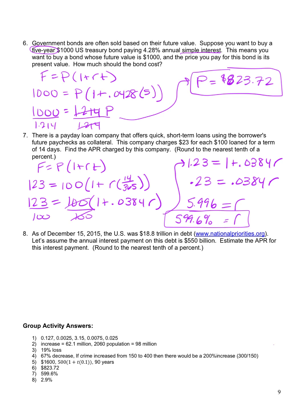And number eight, as of December 15, 2015, the U.S. was 18-point-trillion in debt. Let's assume the annual interest payment on this debt is 550 billion. We want to estimate the APR for this interest. So APR is just the amount of interest you pay compared to the amount you owe.